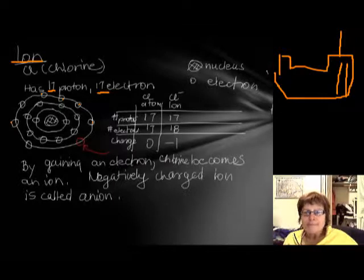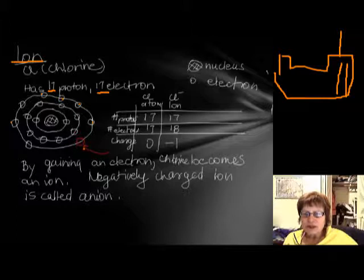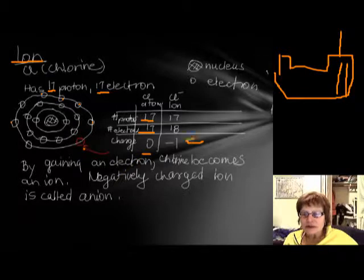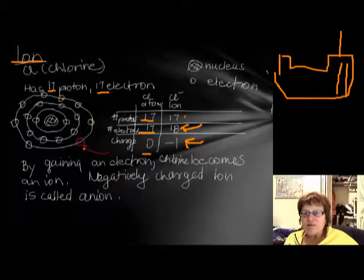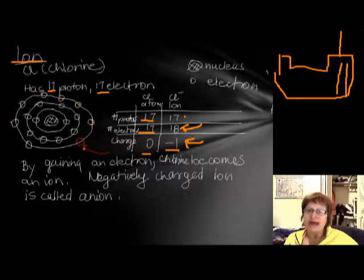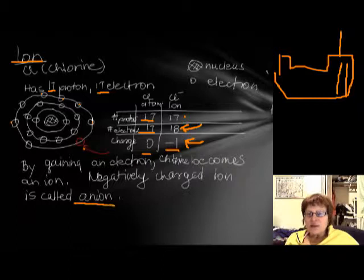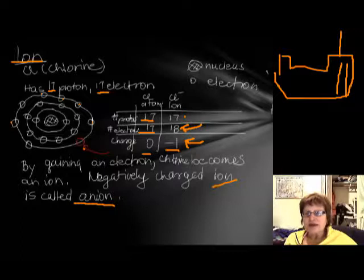Originally chlorine has 17 protons and 17 electrons with no charge. When it gains that one electron, it has 18 negative and 17 positive charges, giving it one negative charge. The neutral atom became an ion, and the negatively charged ion is called an anion.